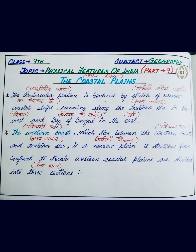And where does it go? Running along the Arabian Sea — Arab Sagar — which is in the west, passing through the west, and the Bay of Bengal — Bangal ki Khadi — which is in the east. So these are your Coastal Plains. Now these Coastal Plains, yani Tatiye Meydan, are divided into two parts: western coast and eastern coast.